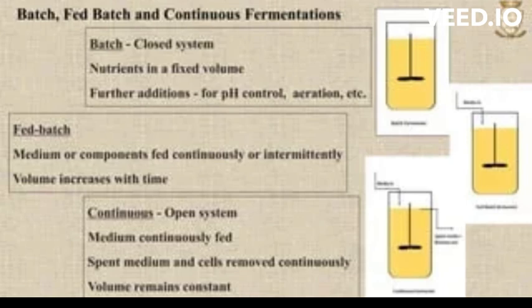An example of a continuous culture is growing bacteria in a chemostat. The culture is maintained at a constant cell density by adjusting the flow rate of medium and the rate of cell harvesting.